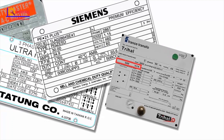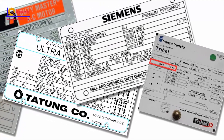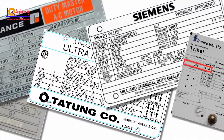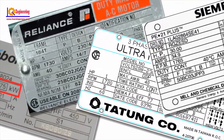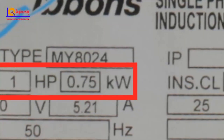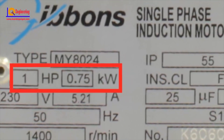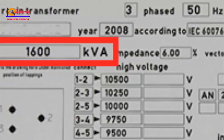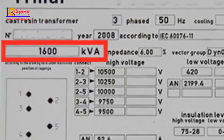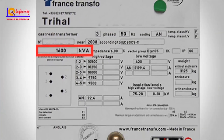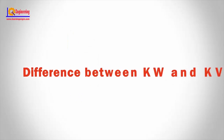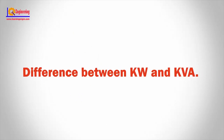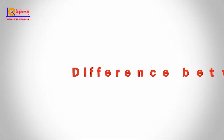Have you ever noticed that with every appliance or piece of electrical machinery that you use, they will always indicate their respective power ratings? You will notice that some electrical equipment expresses their power ratings in kilowatts and some are expressed in KVA. Both values express power, but they are actually different. In this video, we will learn the difference between kilowatt and kilovolt amperes.